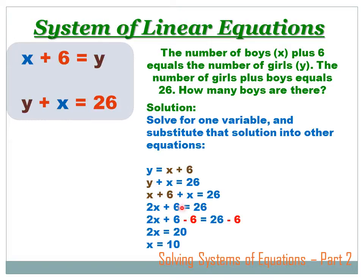I've changed the Y into X plus 6, then I write the rest of the expression and now I've got X plus 6 plus X equals 26. Now I just combine my X's: 2X plus 6, and that still equals 26. I've got to get rid of this plus 6, so I subtract 6 from both sides of the expression. Now I've got 2X equals 26 minus 6, or 20. I've got to get rid of that two times, so I'm going to divide both sides by 2. On the left, I'm left with just X. On the right, I've got 10.